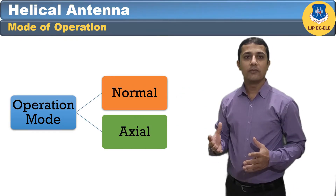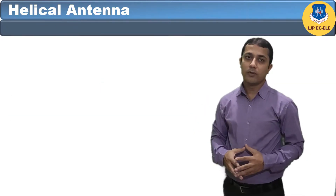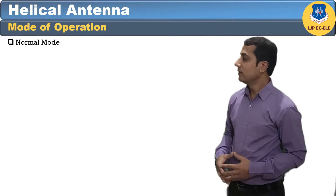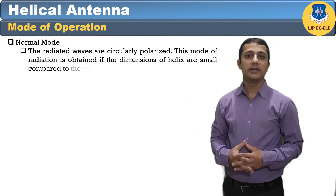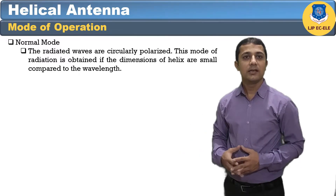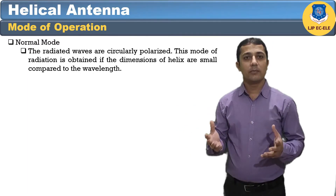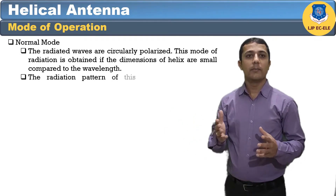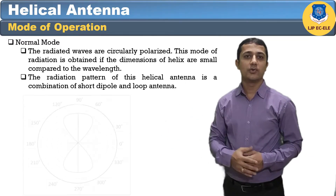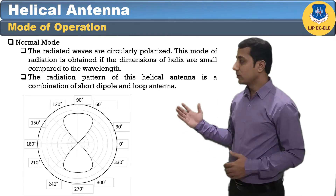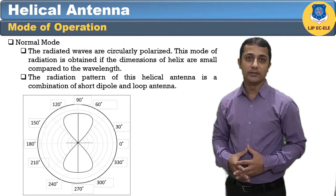The predominant modes of operation of the helical antenna are: normal mode or perpendicular mode of radiation, and axial mode or end-fire beam mode. In normal mode, the radiation field is normal to the helix axis and the radiated waves are circularly polarized. This mode is obtained if the dimensions of the helix are small compared to the wavelength. The radiation pattern is a combination of a short dipole and a loop antenna.